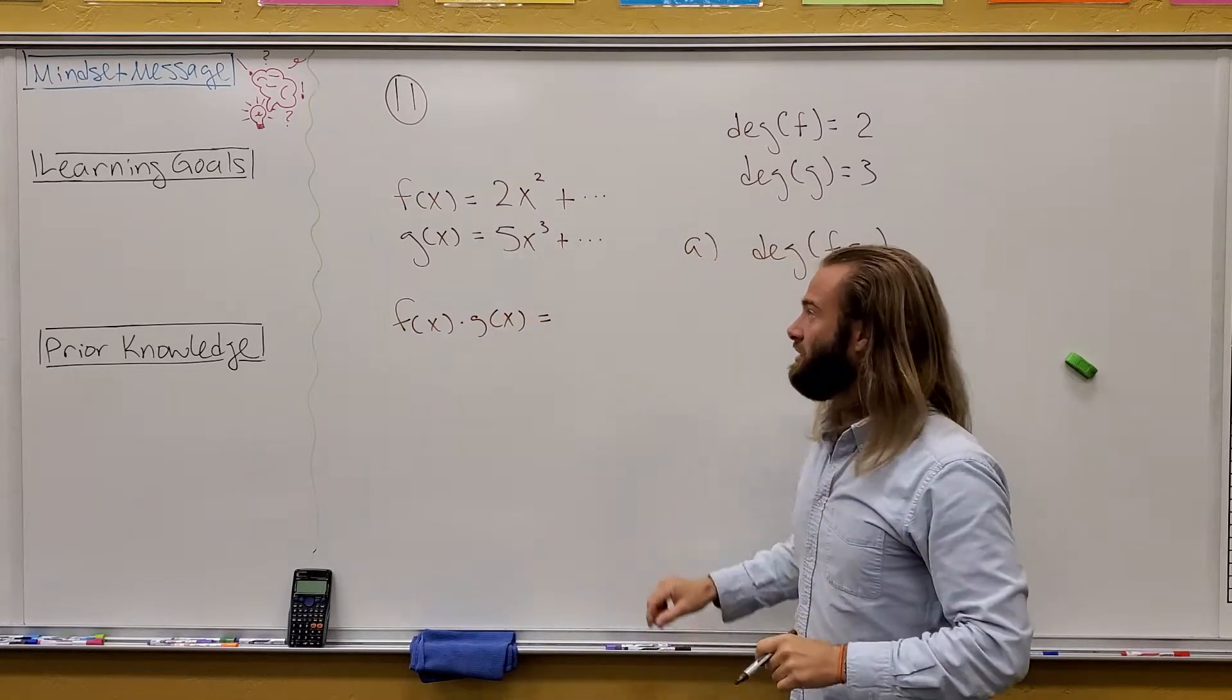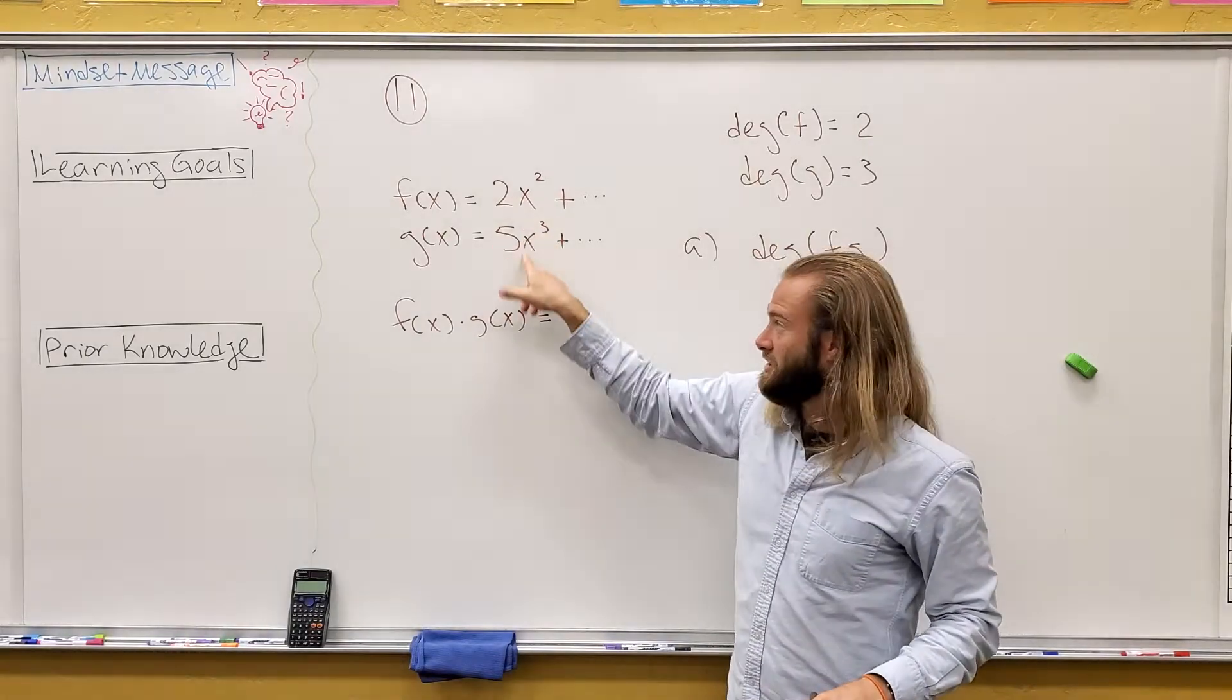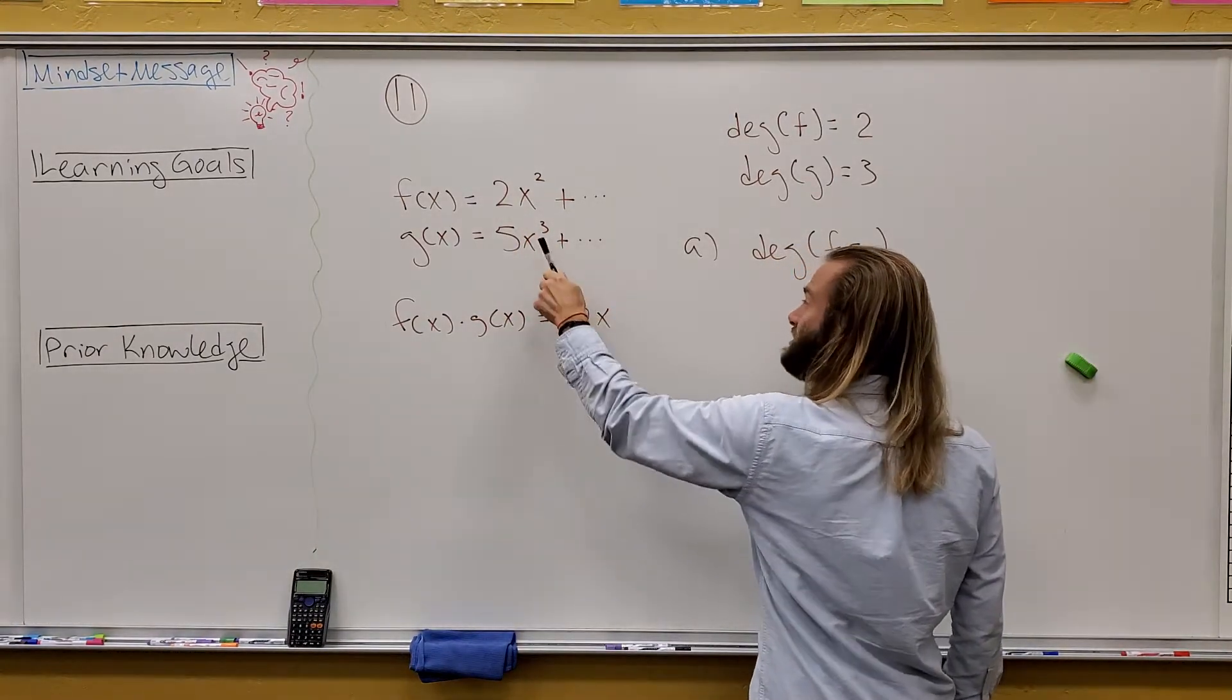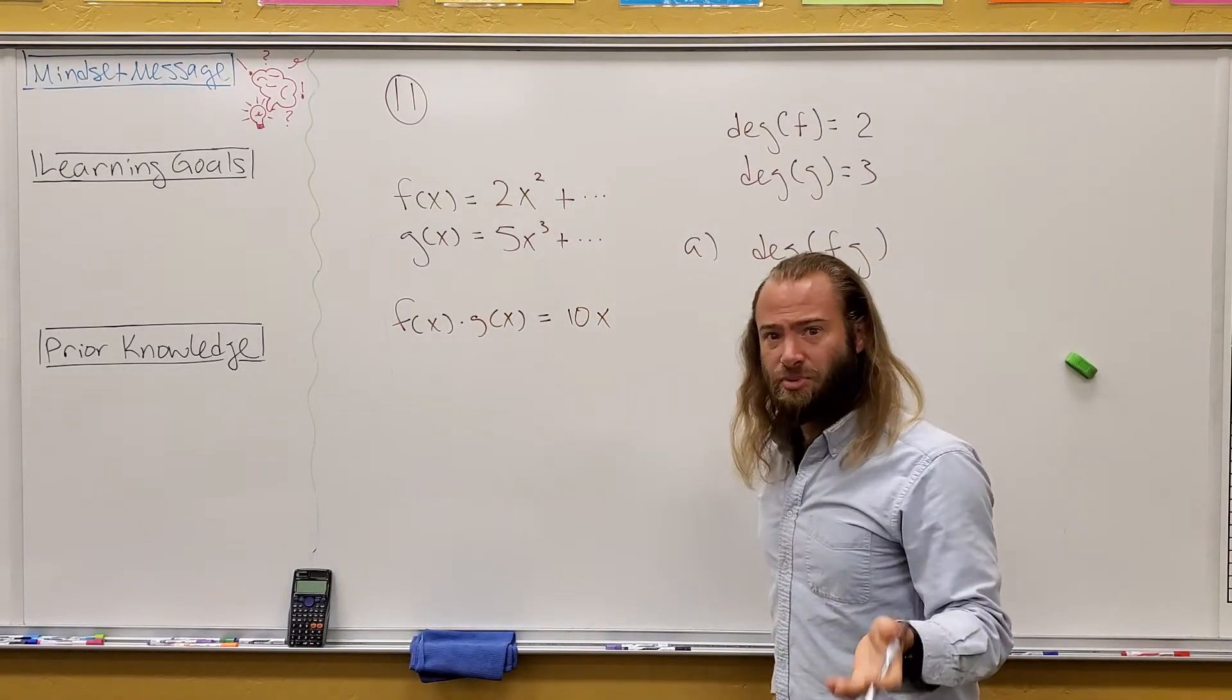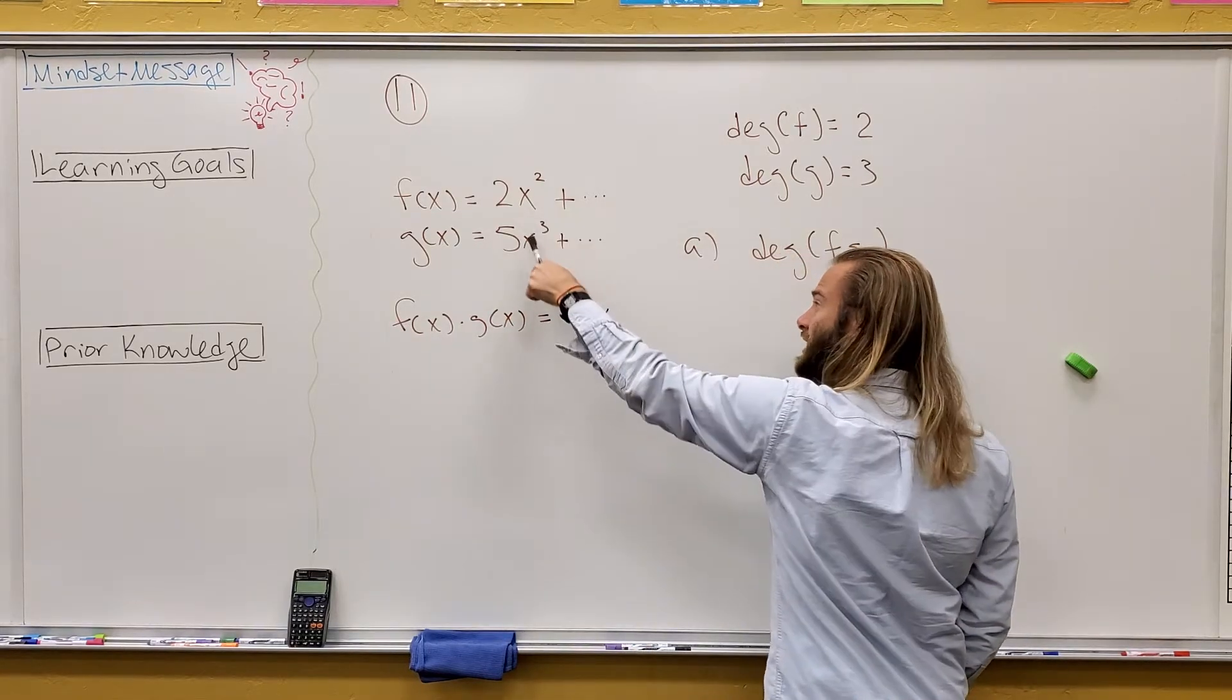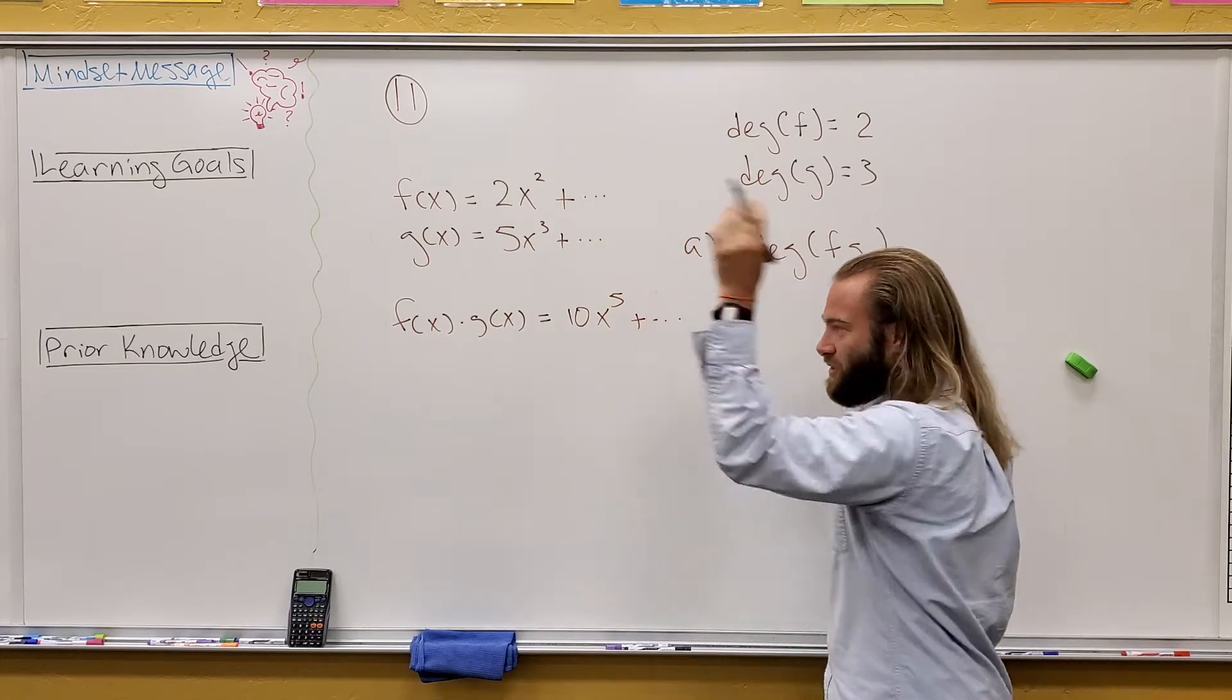In our case, you can ignore the rest of the stuff. The very first term of the product is going to be the product of those two things, right? So it's going to be 10X. But what do I do with the degrees when I multiply two polynomials? You add, right? X cubed times X squared becomes X to the fifth. And then this is still plus whatever.